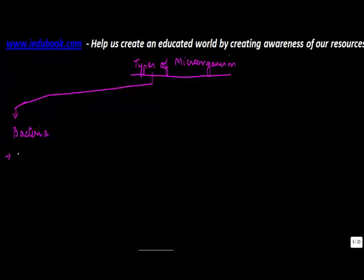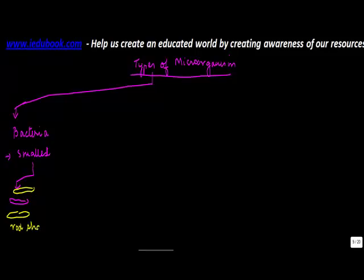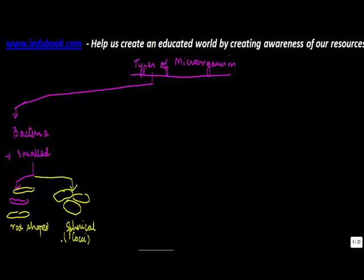The characteristic of bacteria is that they are most probably the smallest of all organisms present, and they could be available in four shapes. One is rod-shaped — rod-shaped bacteria are known as bacilli. They may also be something like a sphere, which are known as cocci.